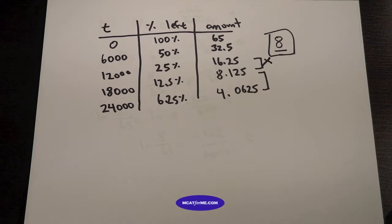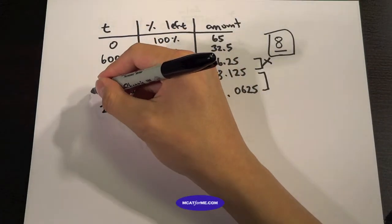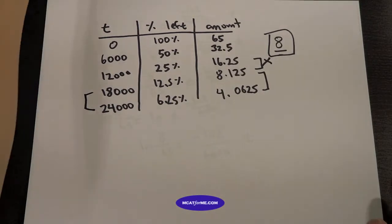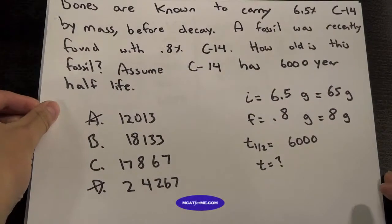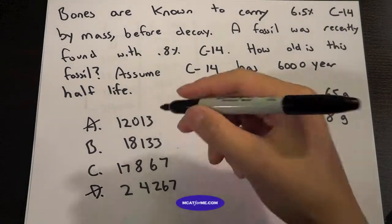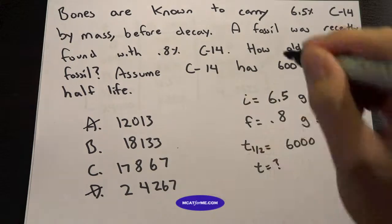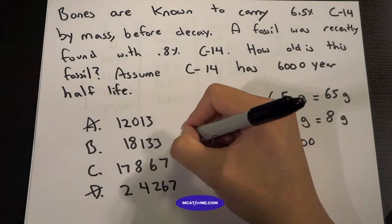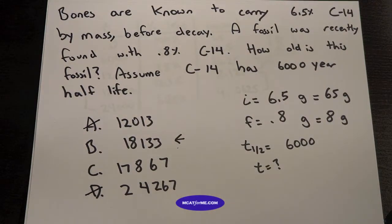And so we know that it's not between that. We know that our age has to be between 18,000 and 24,000. We just don't know how much. But lucky for us and lucky for whenever you take the MCAT, your answer choices will never be that close. So we know that it's greater than 18,000, but we know it's nowhere near 24,000. So that's why we chose 18,133.